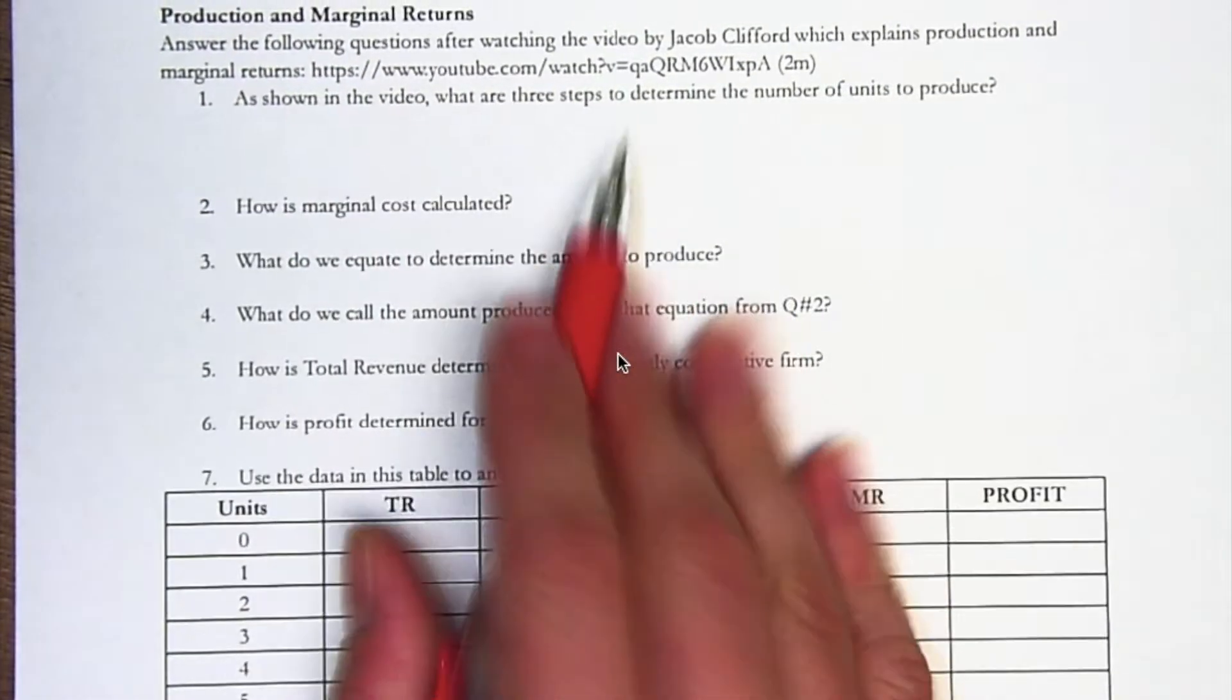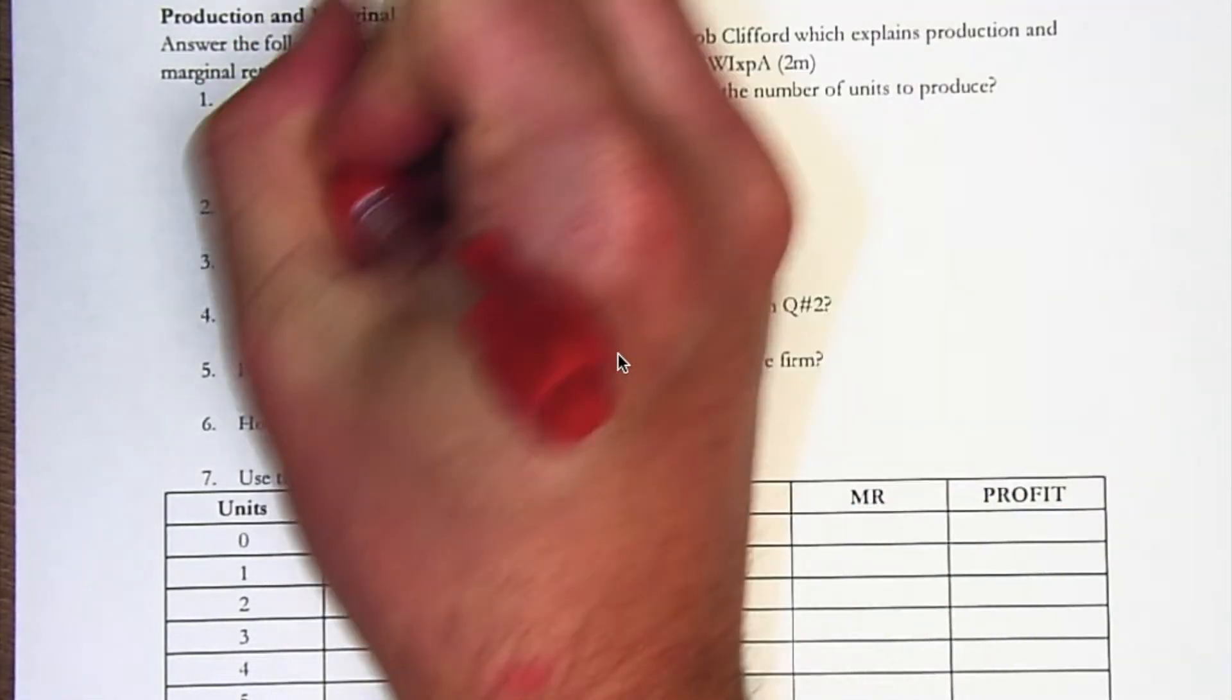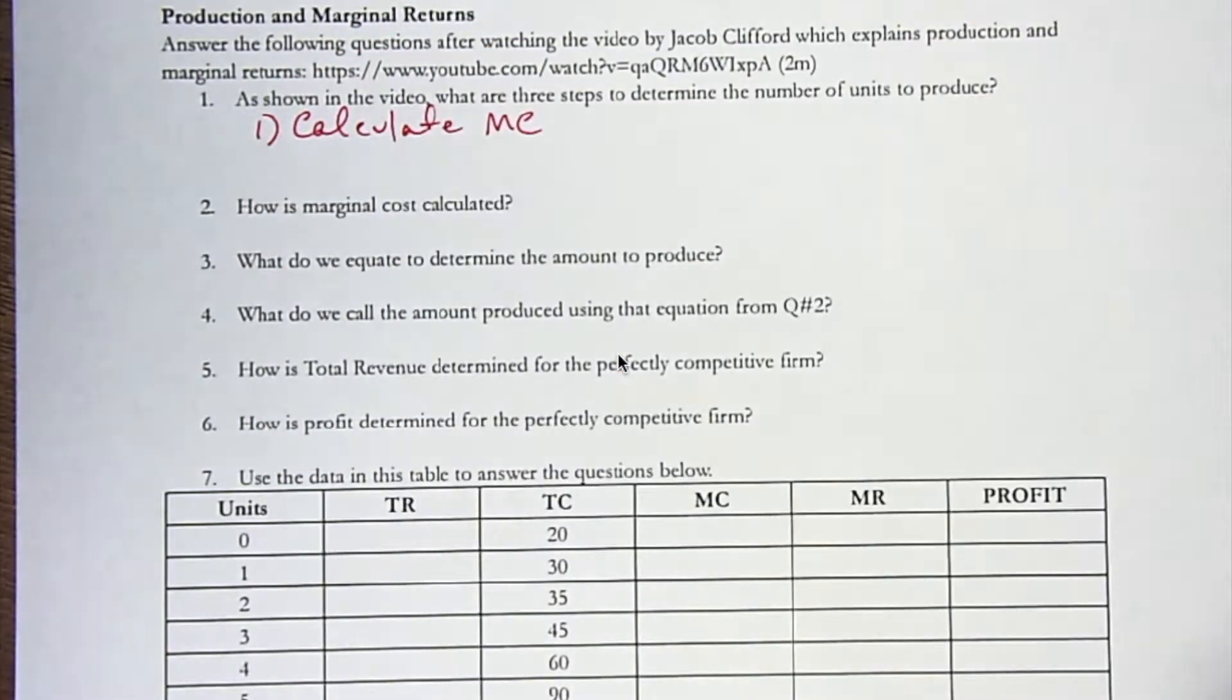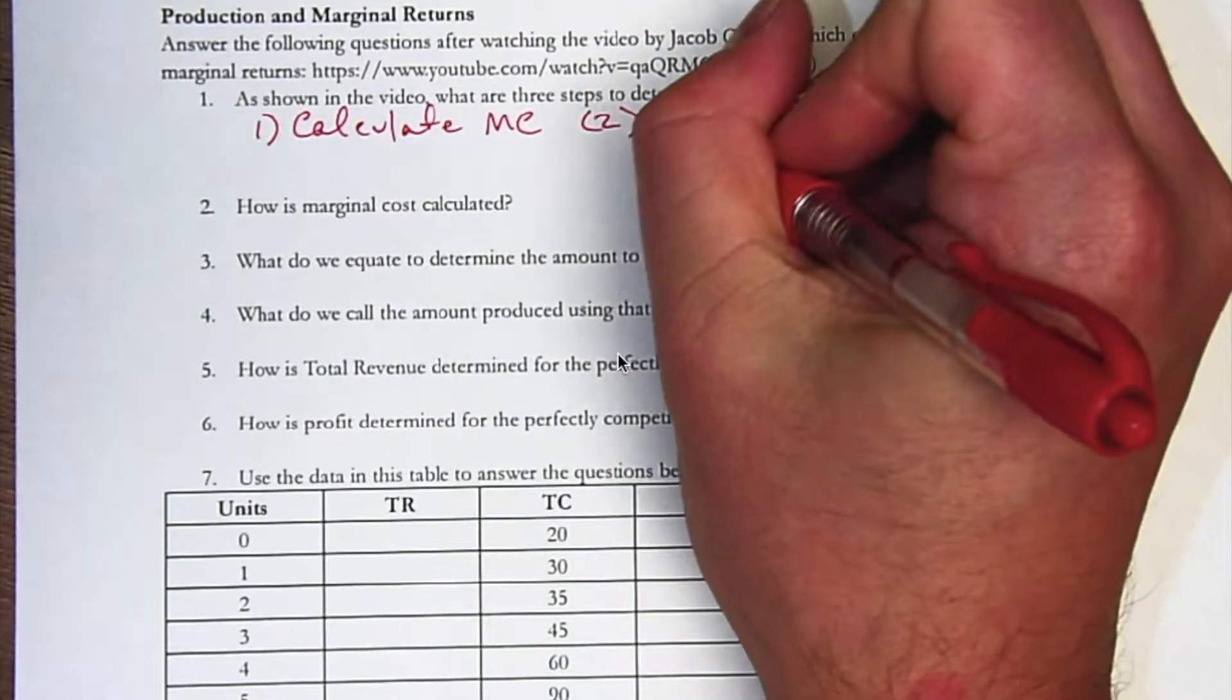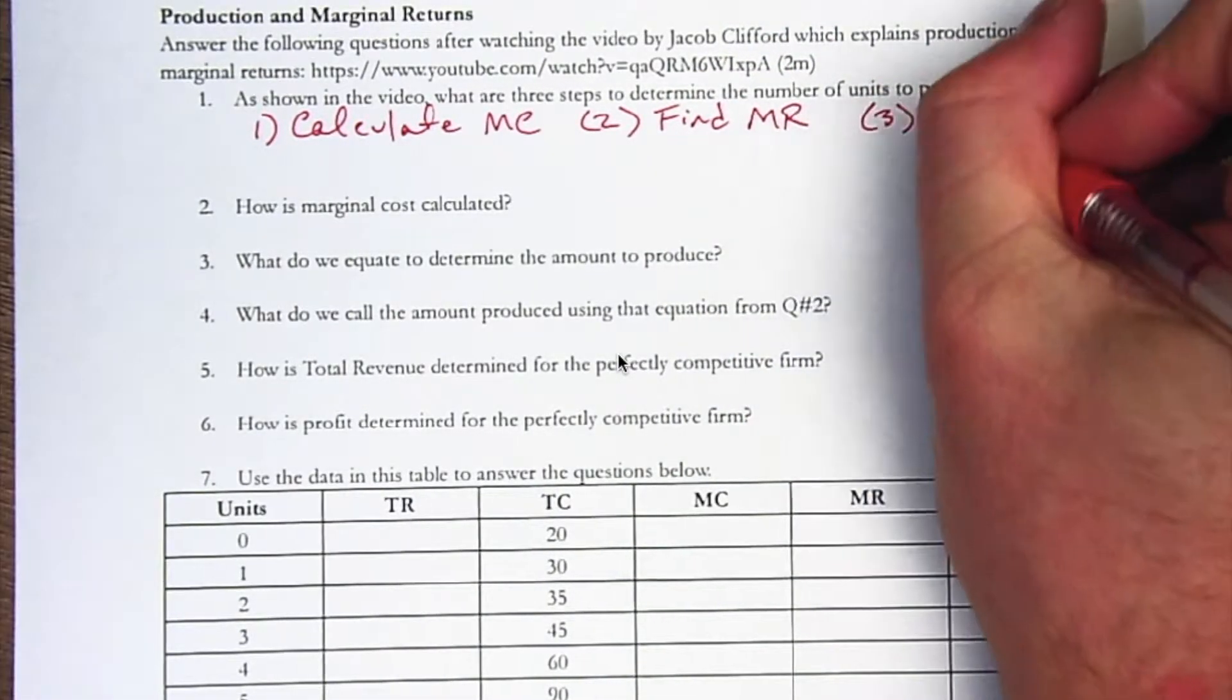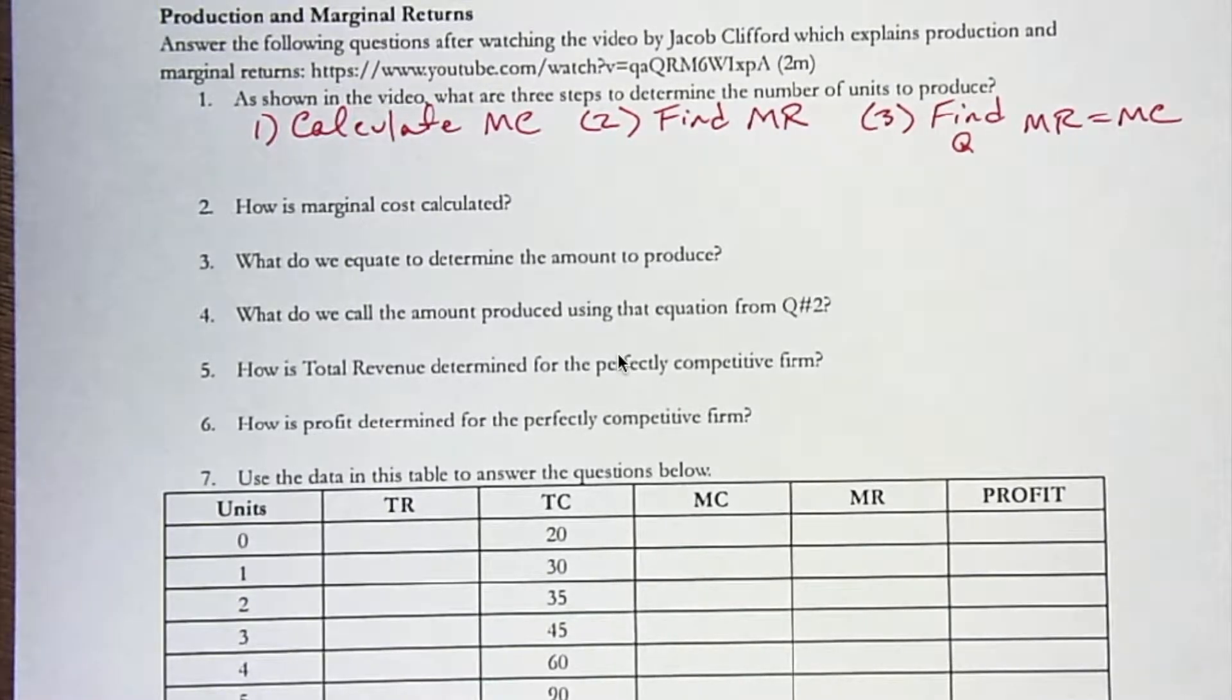If you watch the video, you can find that he gives three pretty clear steps to determine the number of units to produce. The first is to calculate the marginal costs. The second step is to find or identify the marginal revenue. And the third is find the quantity where MR equals MC.